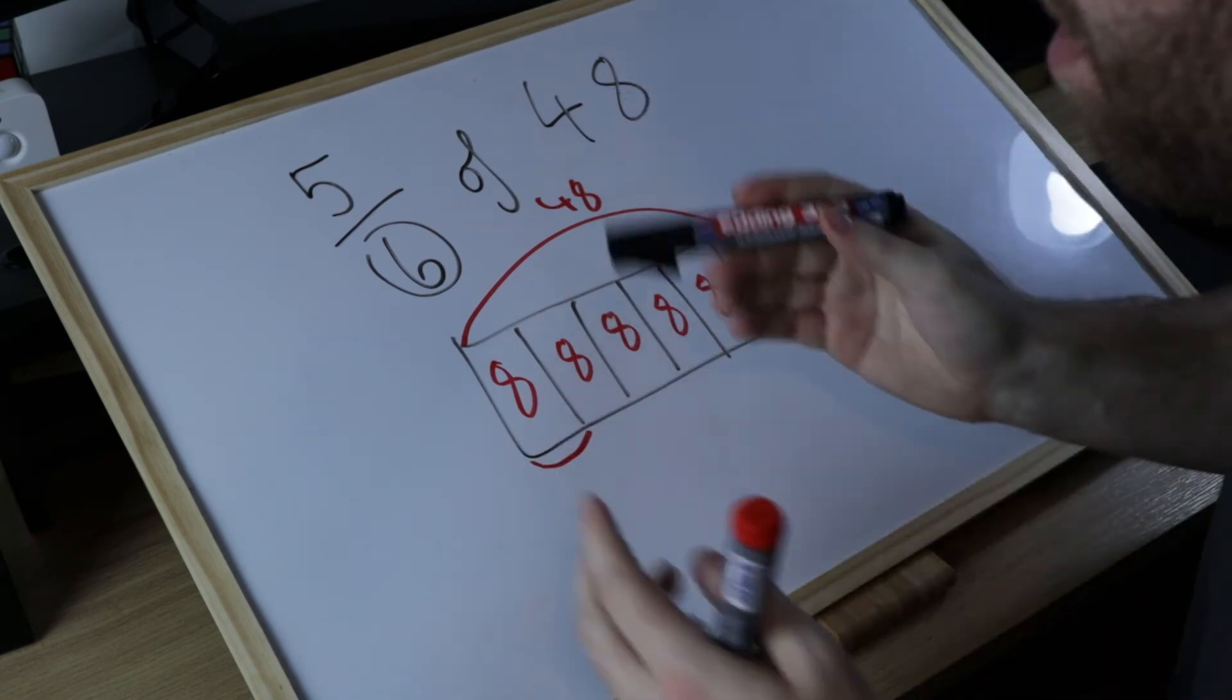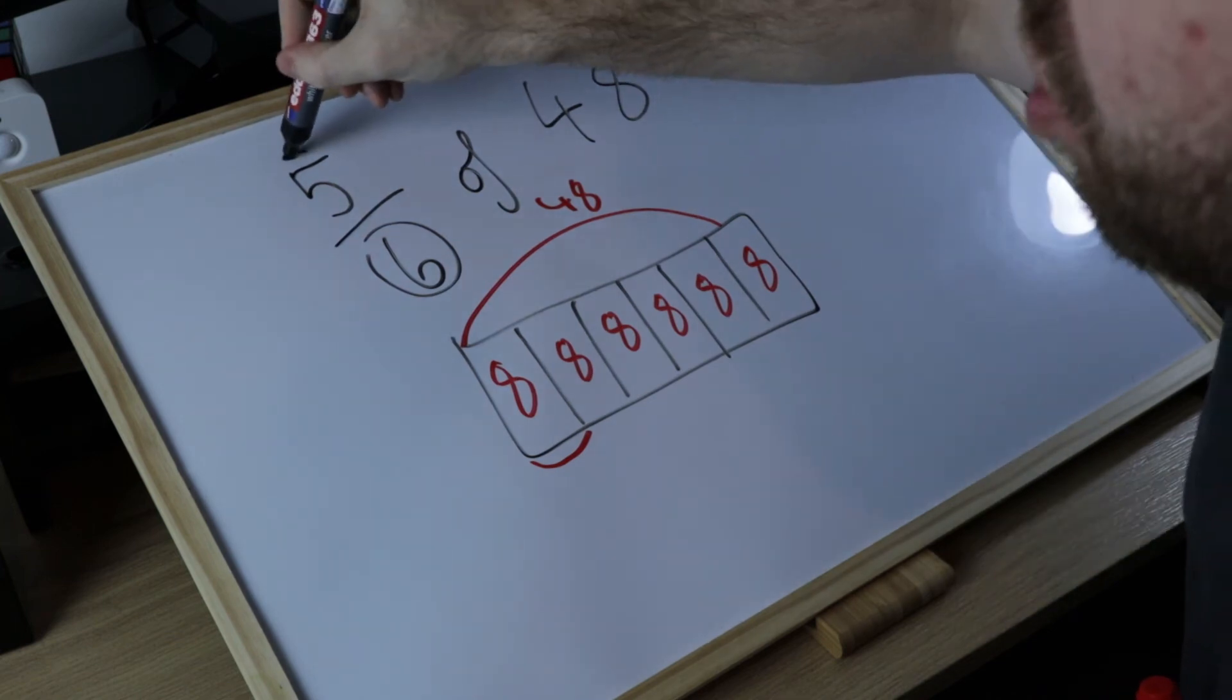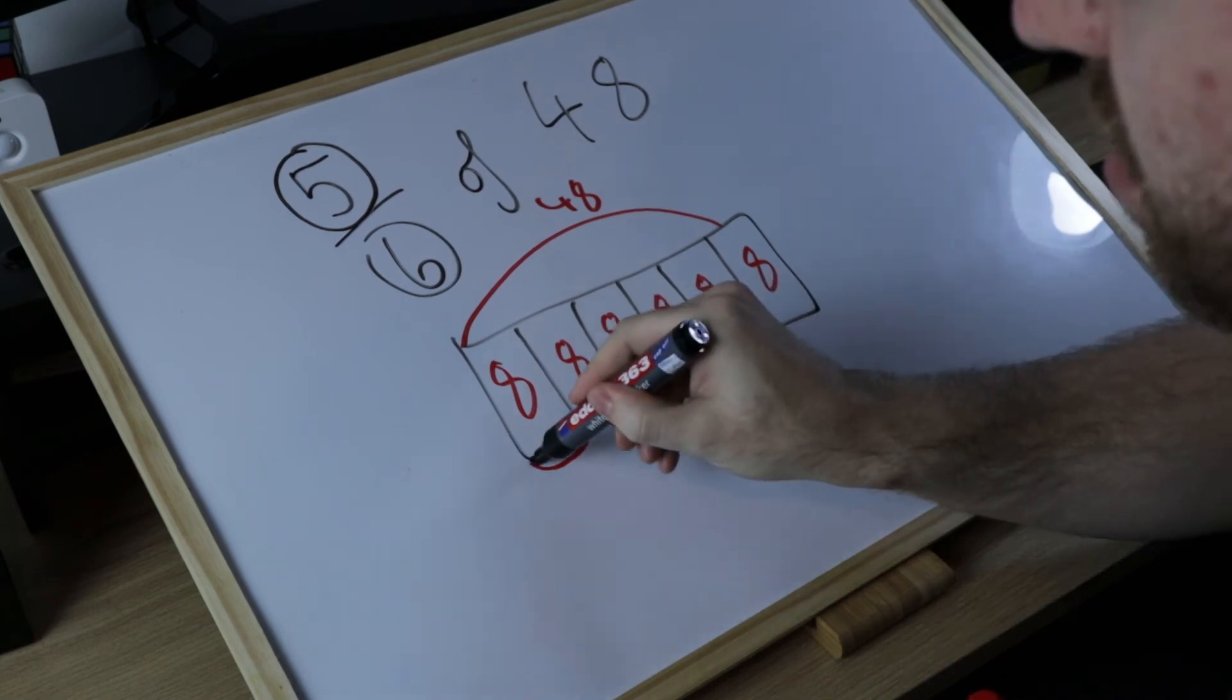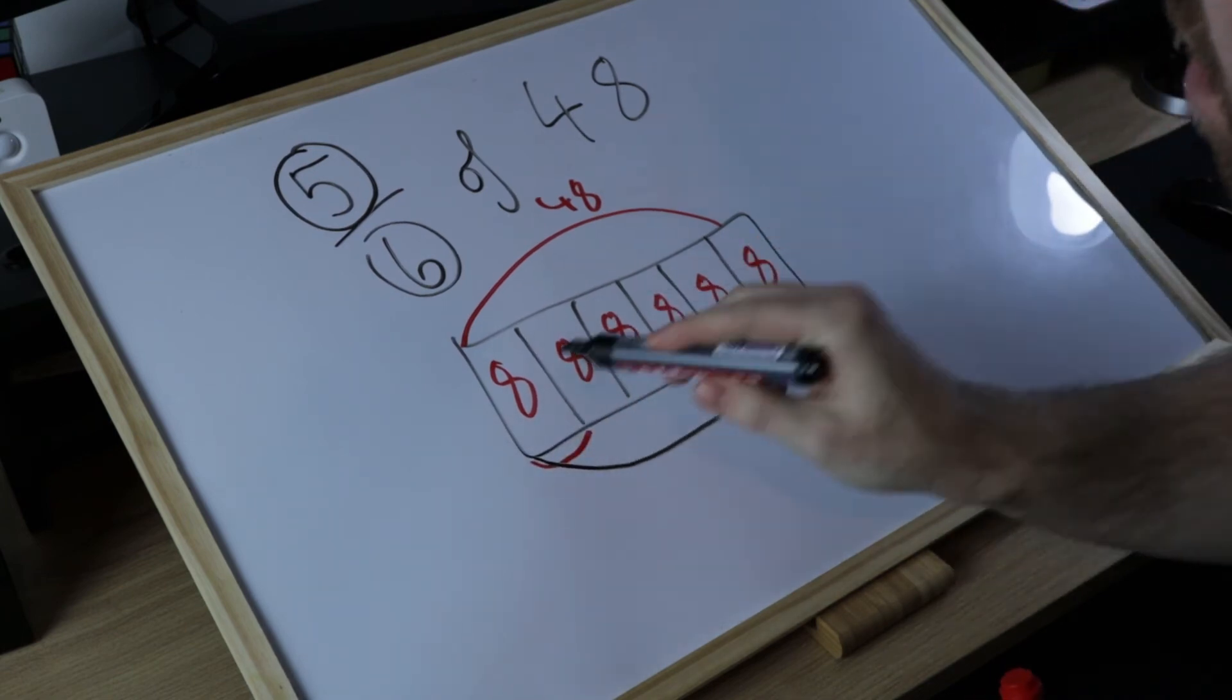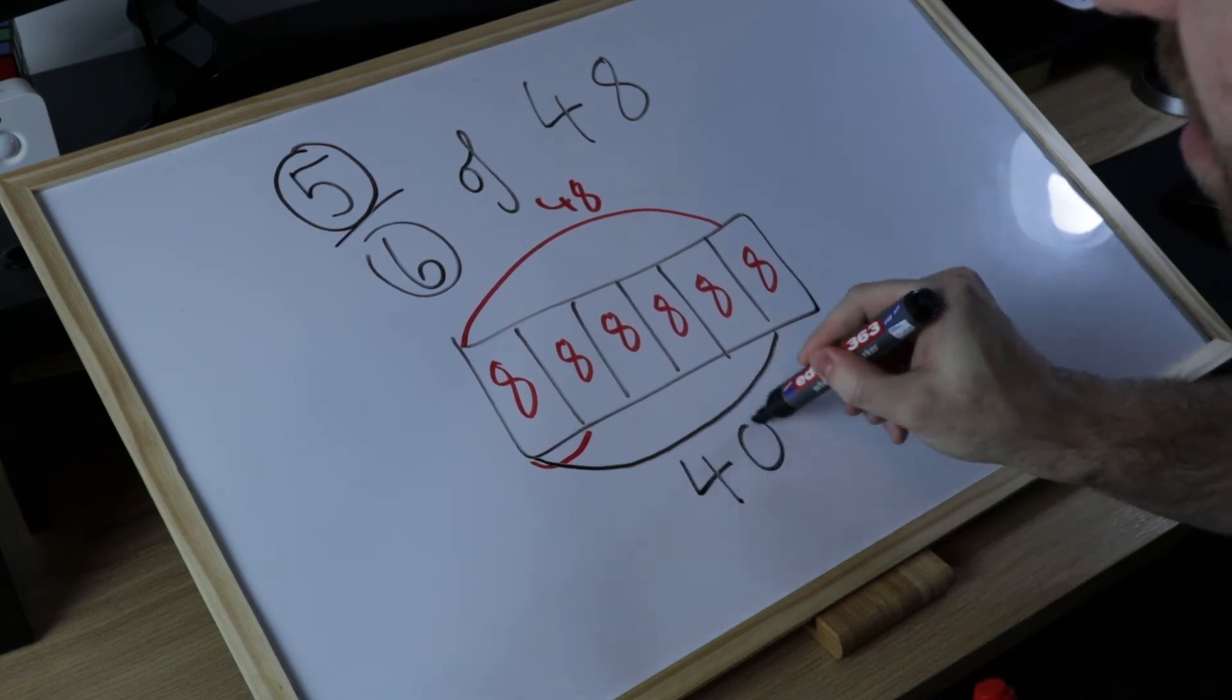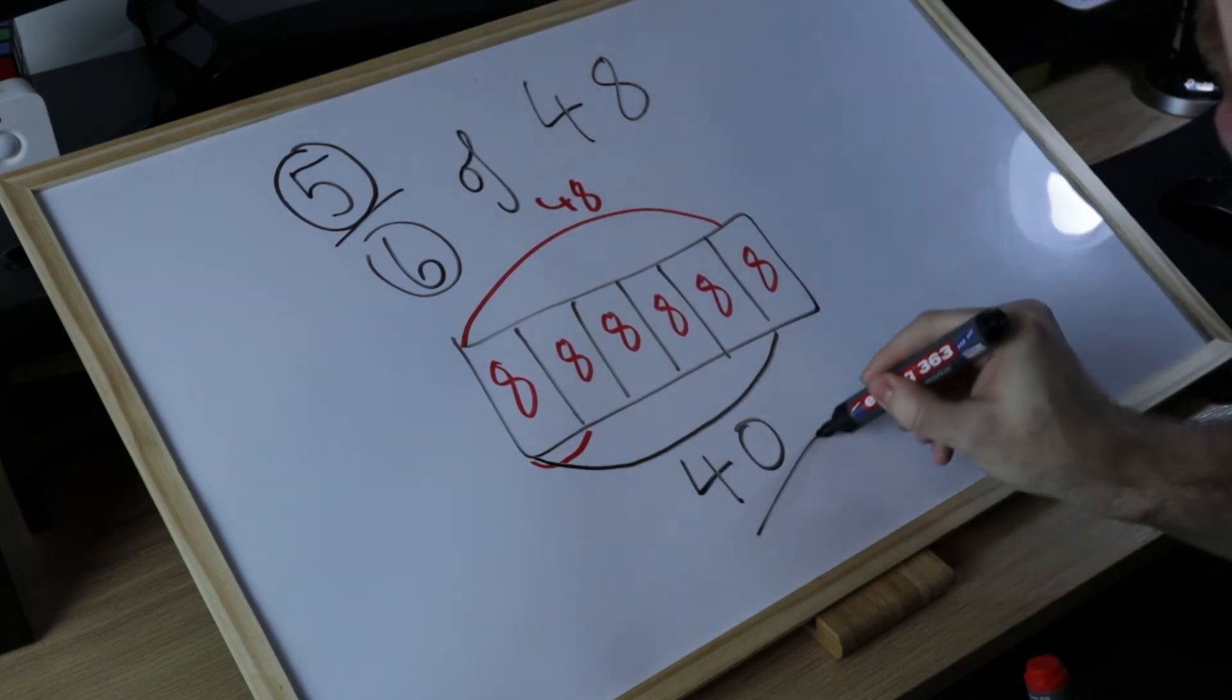However, that is not our answer. We cannot just put eight. In this question the numerator is five, so I need five lots of eight. I'm going to put my bracket in, five lots of eight. Five times eight is 40. Five-sixths of 48 is 40.